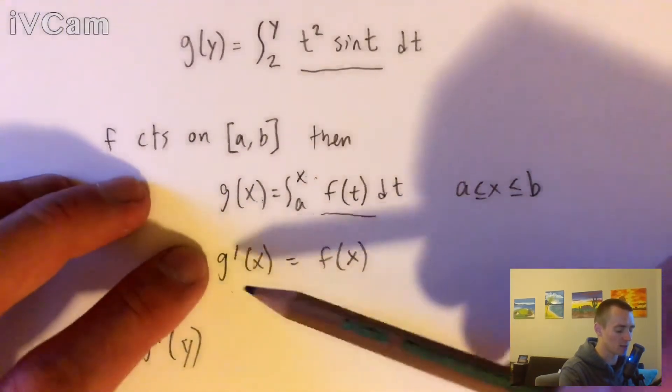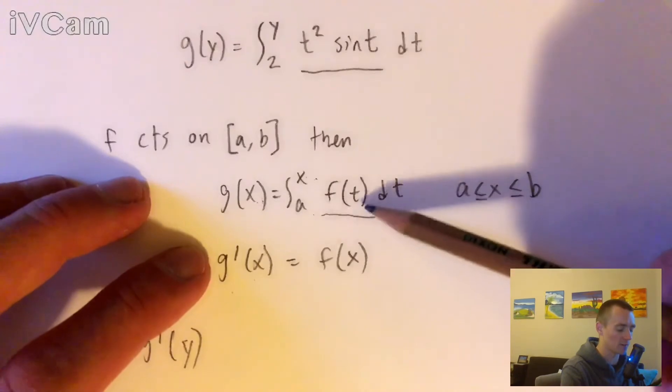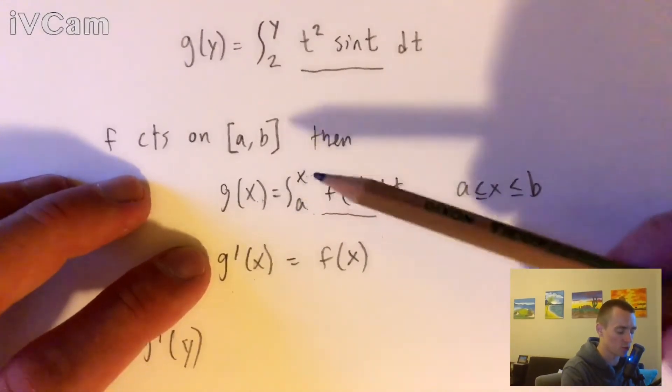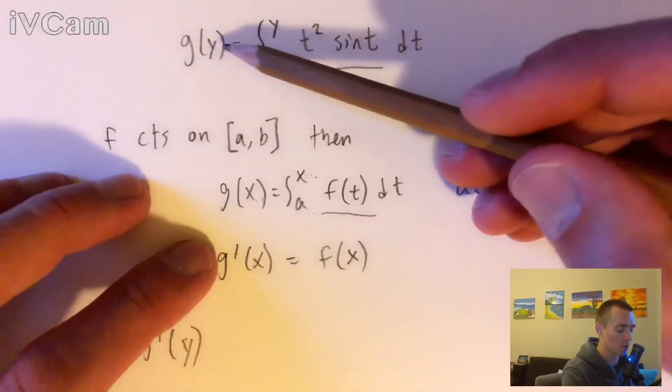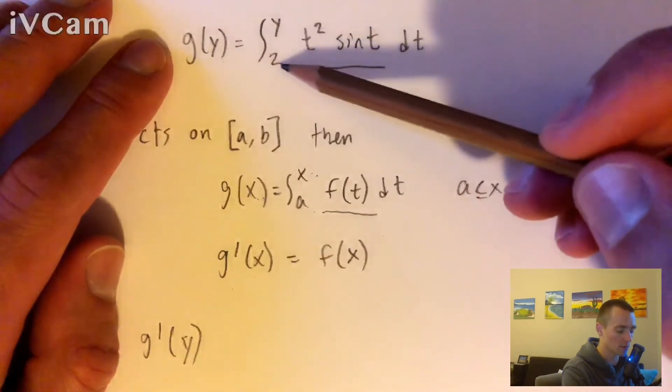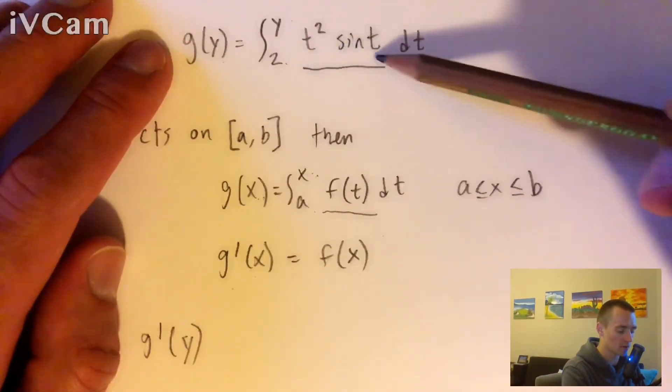So essentially what this is saying is the derivative of the integral will just leave us with whatever this function is in here, as long as we're integrating from some constant to our variable x, or whatever this variable here would be. In this case, we're integrating from our variable y, right, from some constant 2 to our variable y, and we're integrating this function f of t.